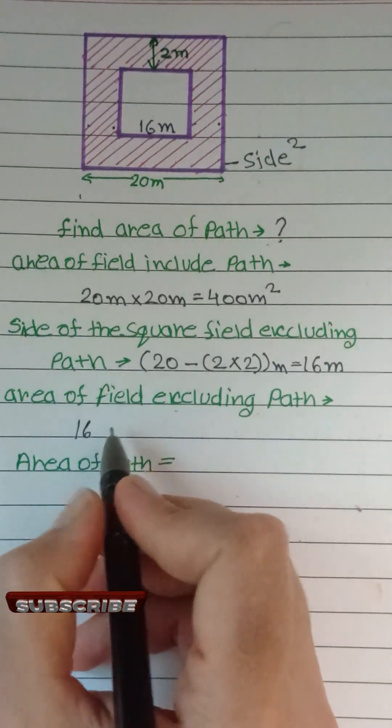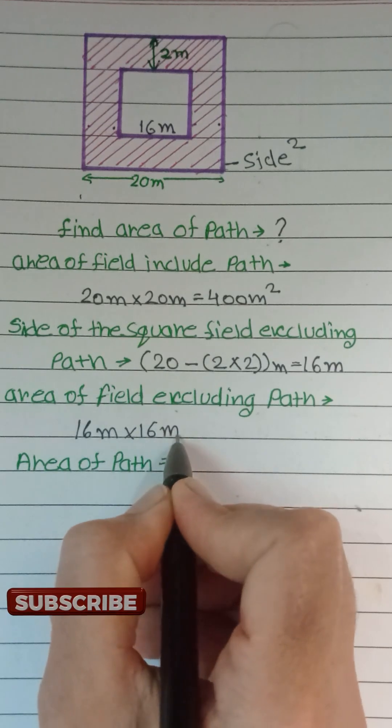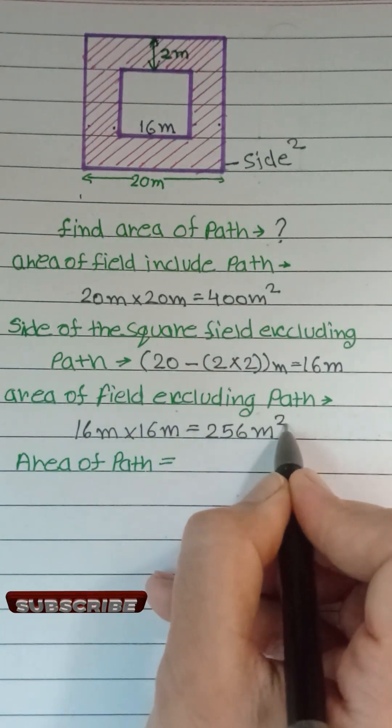Side of square field excluding the path is 16 meter. Let's find area of inner field by square of its side 16 meter. Area of inner field is 256 meter square.